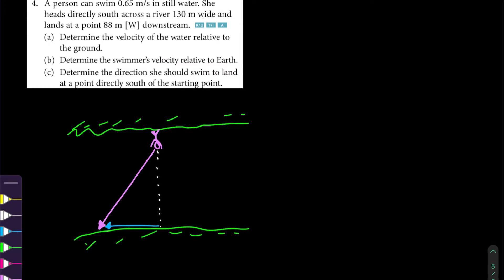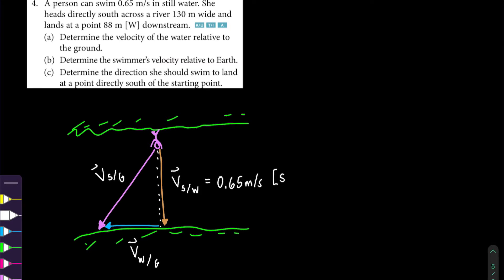A. Determine the velocity of the water relative to the ground. B. Determine the swimmer's velocity relative to the earth. And C. Determine the direction she should swim to land at a point directly south of the starting point.